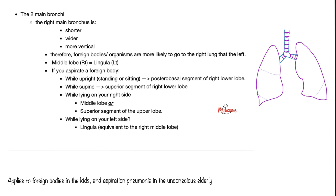A sneaky exam question: you see the right main stem bronchus and the left main stem bronchus — is there a difference? Yes. The right bronchus is shorter, wider, and more vertical. The left one is more horizontal. Therefore, if bacteria or an inhaled foreign body like a peanut enters your lungs, it's easier for it to go to the right lung than the left lung — because of gravity. By the way, your right is the patient's left and your left is the patient's right — we're looking at a person facing you.